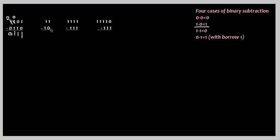Next one is 1 1 minus 1 0. So 1 minus 0 equals 1, directly 1. 1 minus 1 equals 0. Now let me go to the next example. Last one is 1 minus 1. Subtraction means 1 minus 1 is 0. 0, 1 minus 1 is 0. 1 minus 1 is 0.